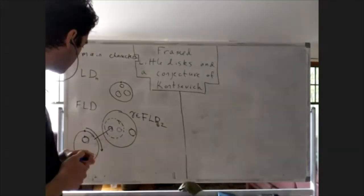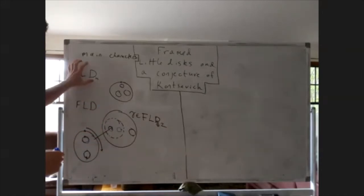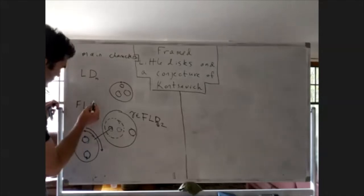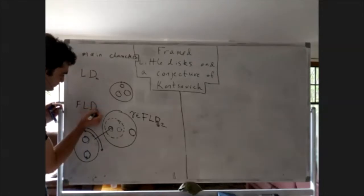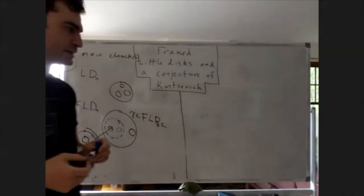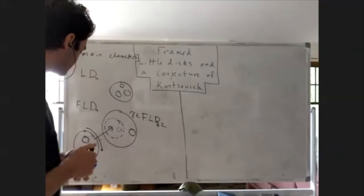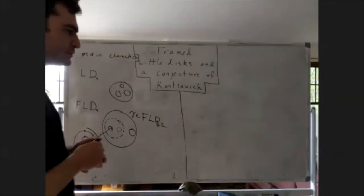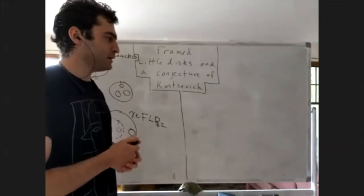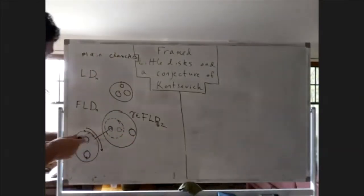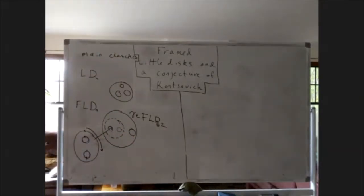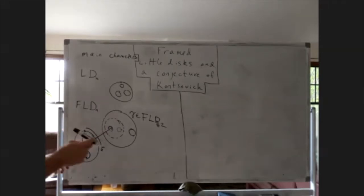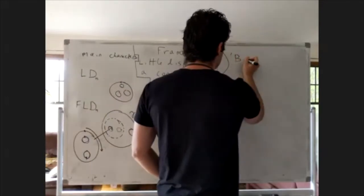I will talk about a number of results about mostly the little disks operad, but in fact both of these operads, starting with formality — variously known as the Deligne formality conjecture or the formality conjecture. Before getting into this, I want to demonstrate a technique for proving formality results, which is a baby example and does not use operad structure.